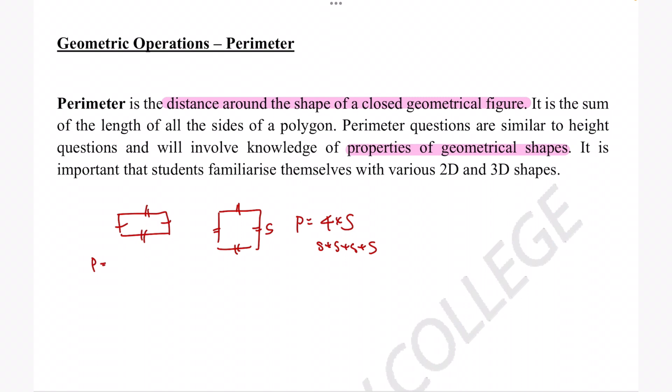With the rectangle, two of its sides are the same, so we've got the length and the width. That would be 2 times the length plus 2 times the width, or we can just add them all together as well.